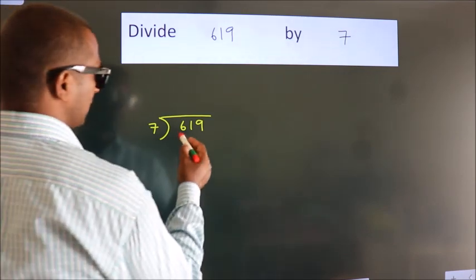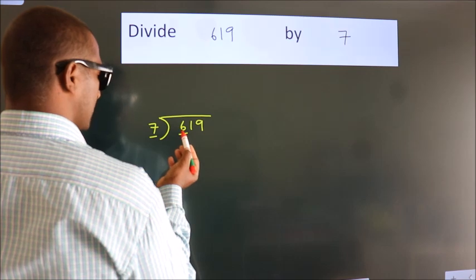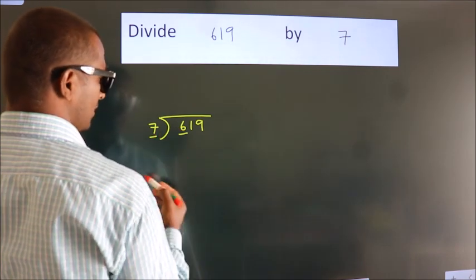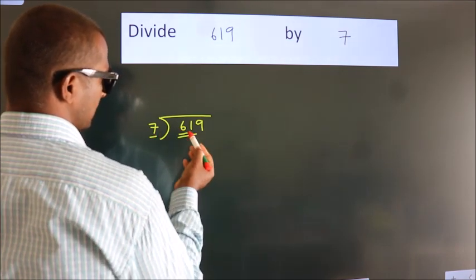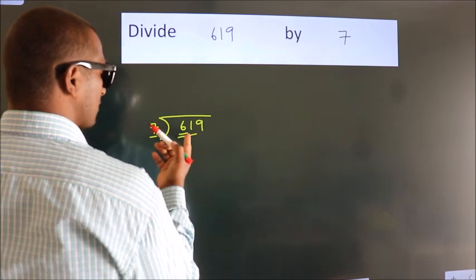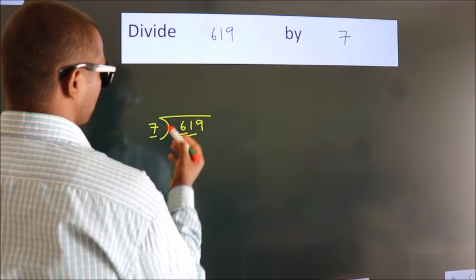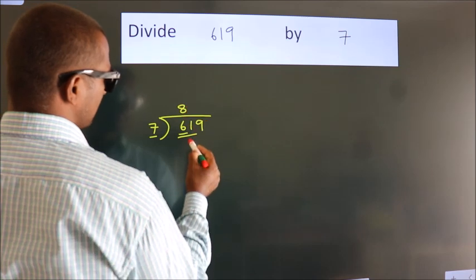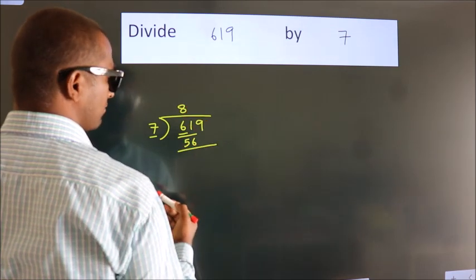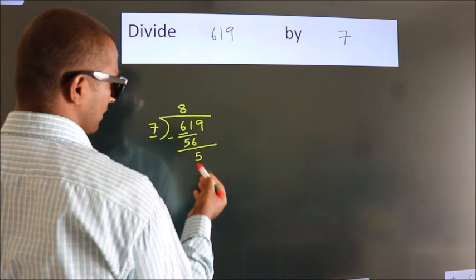Here we have 6, and here 7. Since 6 is smaller than 7, we should take two numbers: 61. A number close to 61 in the 7 table is 7 × 8 = 56. Now we should subtract, and we get 5.